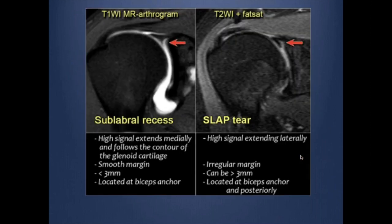The superior and superior-anterior labrum is a common area of variant. We have the sub-labral recess and we have the labral foramina at this region. So generally, how do we differentiate between a real tear and the sub-labral recess? There are some criteria. The sub-labral recess usually extends medially, while the tear extends laterally. The recess has a smooth margin, while the tear has a more irregular margin.